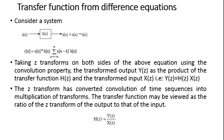Consider a system with input x of n and impulse response h of n, where the output y of n equals x of n convolved with h of n. That is, y of n equals the summation from k equals minus infinity to infinity of x of n minus k times h of n. Taking the Z-transform on both sides using the convolution property, the transformed output Y of z equals the product H of z times X of z. Thus, the Z-transform converts convolution of time sequences into multiplication of transforms.